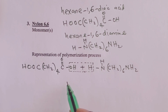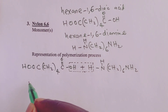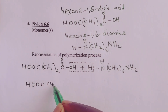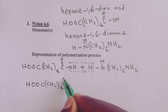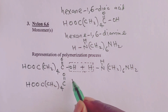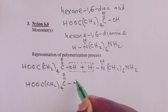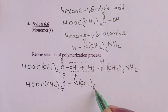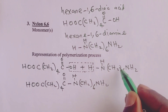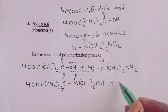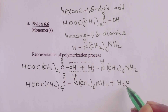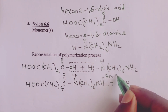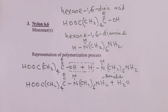What do we obtain? We obtain an amide with this formula: HOOC-(CH2)4-C(=O)-NH-(CH2)6-NH2. This is accompanied by a water molecule. What we obtain here is called an amide. When we polymerize an amide, we get a polyamide, and nylon 6-6 is an example of a polyamide.